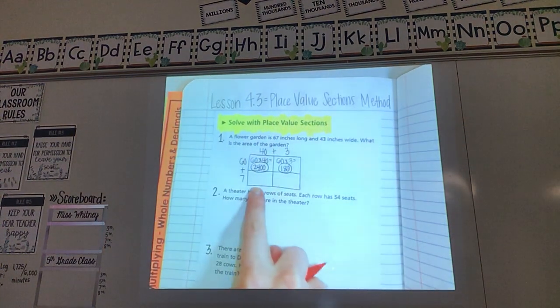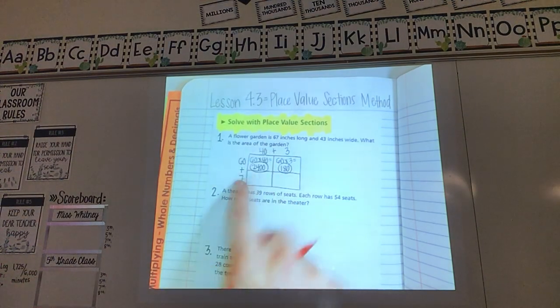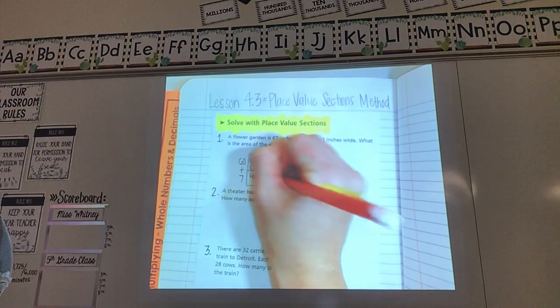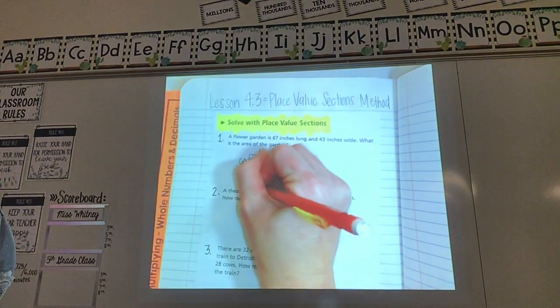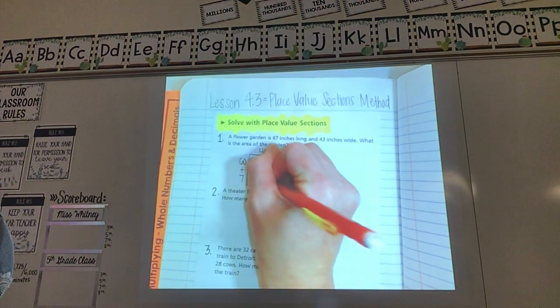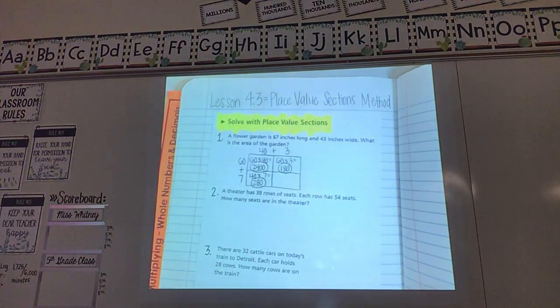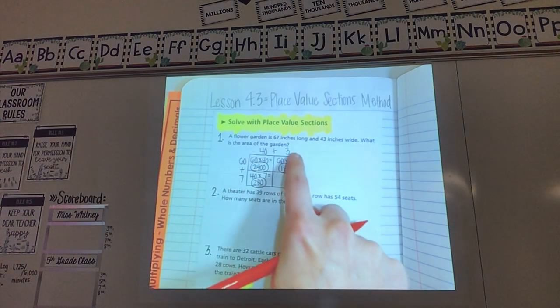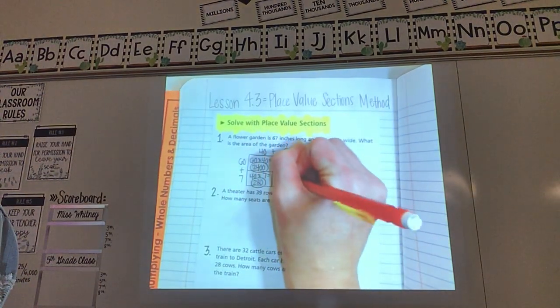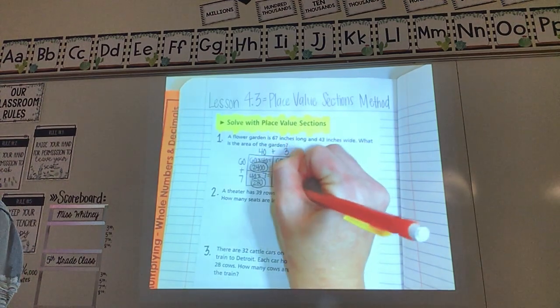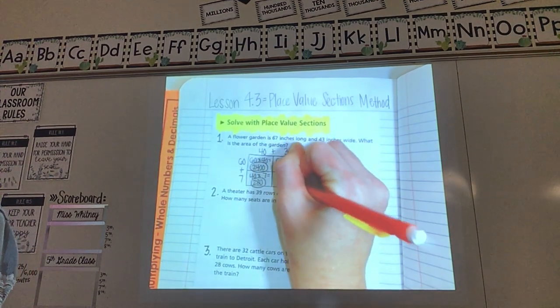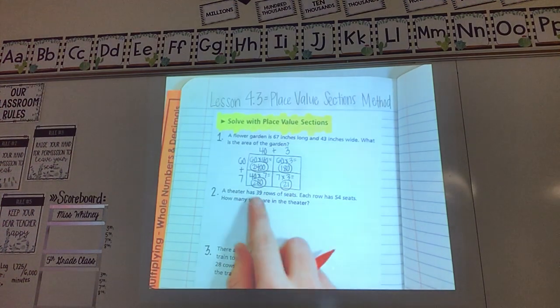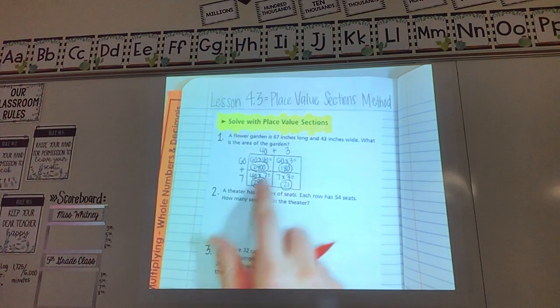Then I go to my next box. 40 and 7. So 40 times 7. Using that zeros trick. 4 times 7 is 28. Add one zero. Remember I'm circling these so I can find them here in a minute. And my last box. 7 and 3. So 7 times 3 which is 21. So I have all my boxes. What do I do once I have all my boxes there?